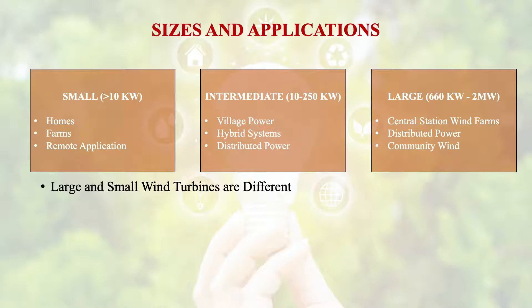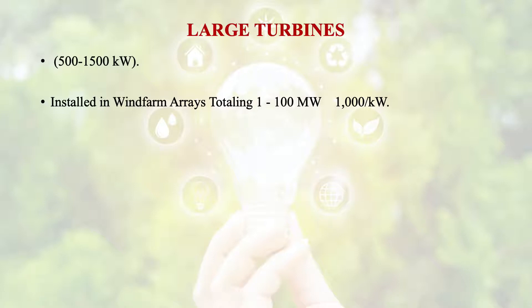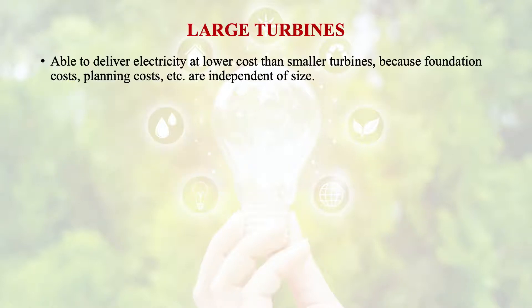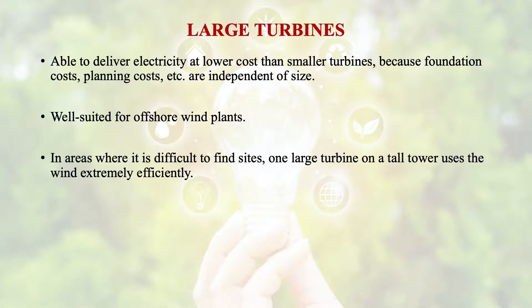The large and small wind turbines are totally different. Large turbines are installed in wind power arrays totaling 1 to 100 megawatt. These are designed for low cost of energy and require 6 meters per second of wind velocity. The average site is able to deliver electricity at lower cost than smaller turbines because foundation costs, planning costs, etc. are independent of size. These are well suited for offshore wind plants and in areas where it is difficult to find sites.